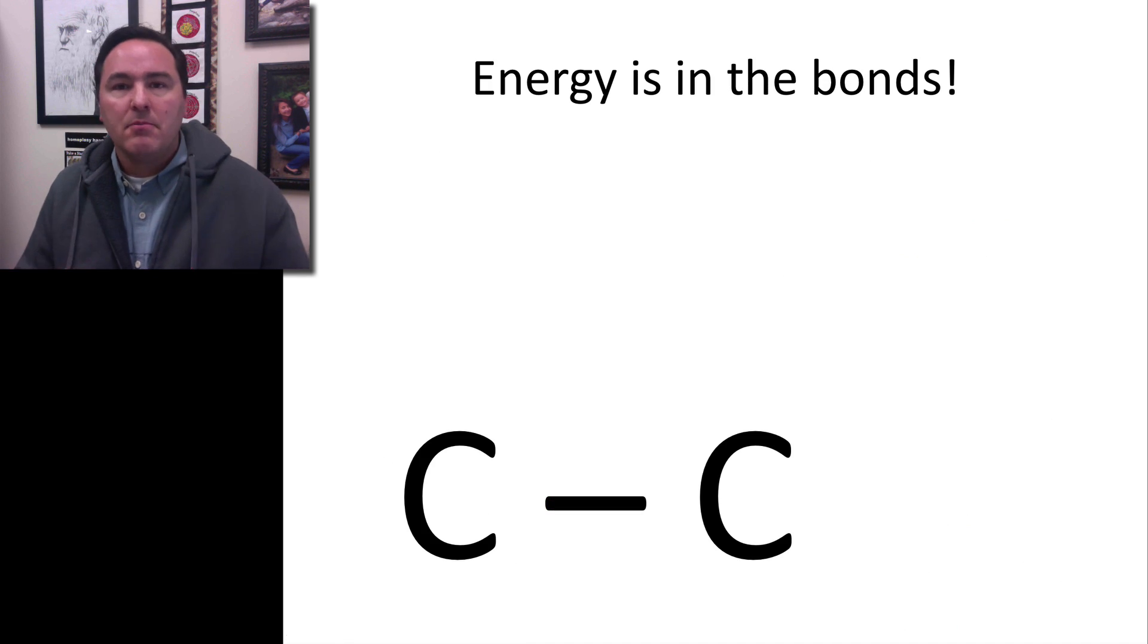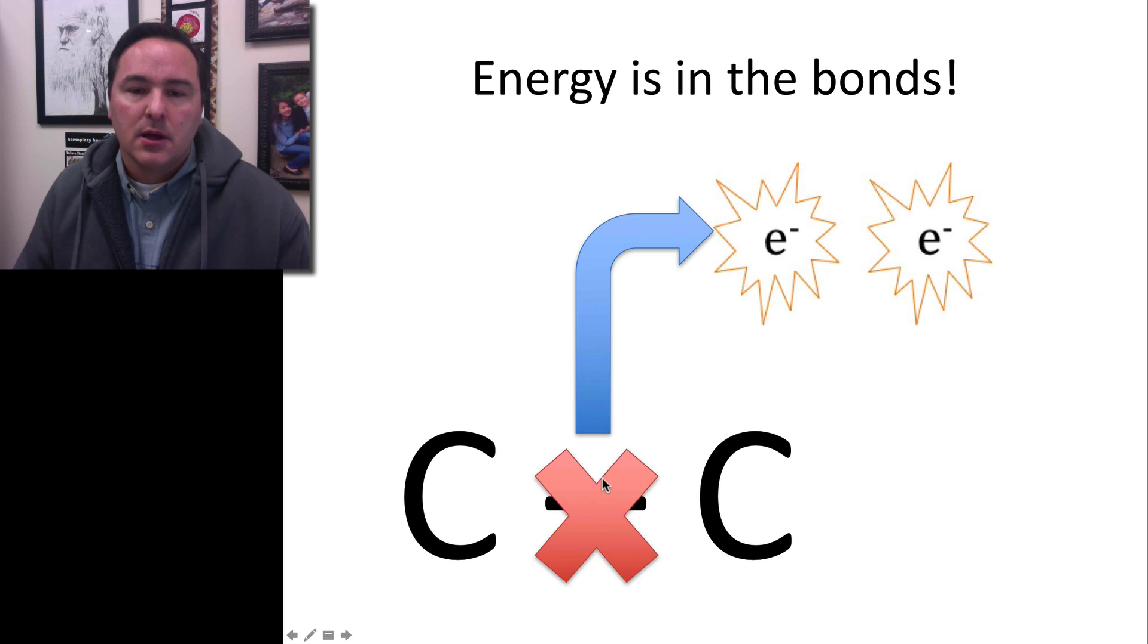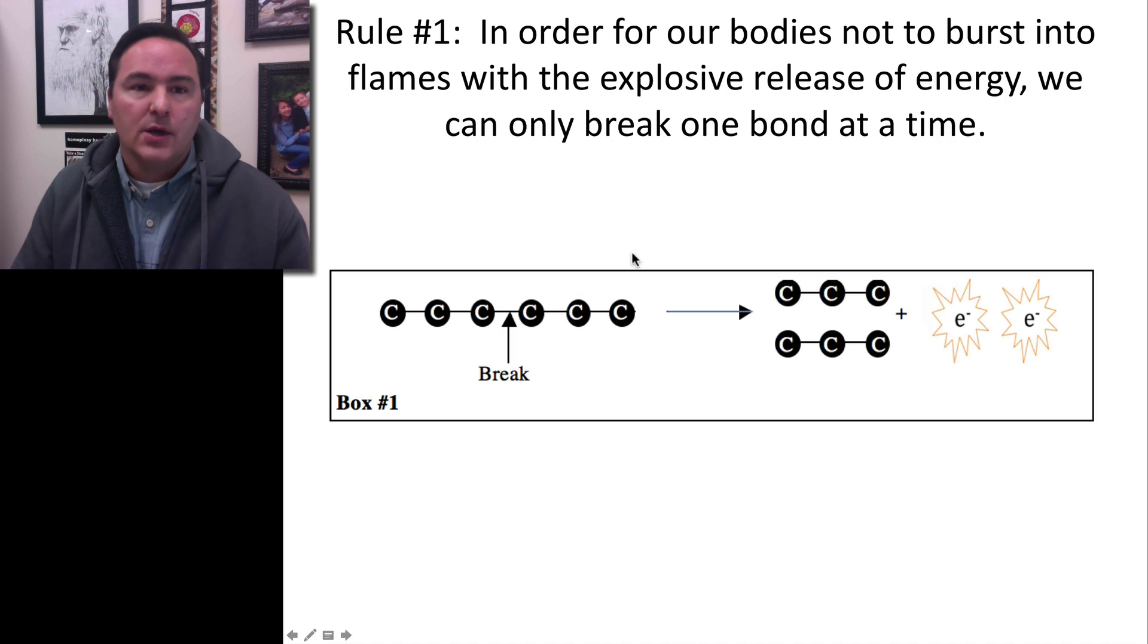The energy from all of these sugars are actually found in the bonds from one carbon to the next. It's this covalent bond between one carbon and another carbon that holds these high-energy electrons. And when that bond is broken, you can think of it in a very simple way as if two high-energy electrons come out of breaking that bond. For our bodies not to burst into flames with the explosive release of energy, we're only going to break one bond at a time. So if you take a six-carbon molecule, you break it in half, you've got two electrons out of that.